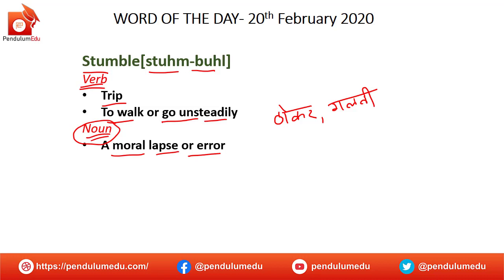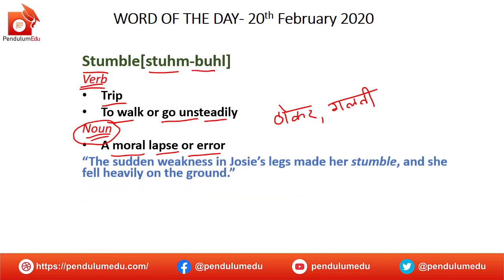Ab hum is ka usage dekhte hain with the help of a sentence. So the first sentence is: The sudden weakness in Josie's legs made her stumble, and she fell heavily on the ground. So Josie's legs ki weakness ki wajah se, ek dam se us ko thokar lag gai, aur ho gir gai, dhadam se ho ground pe gir gai.